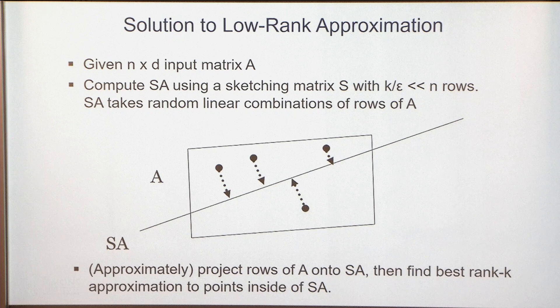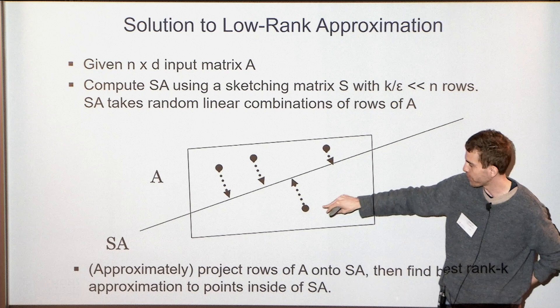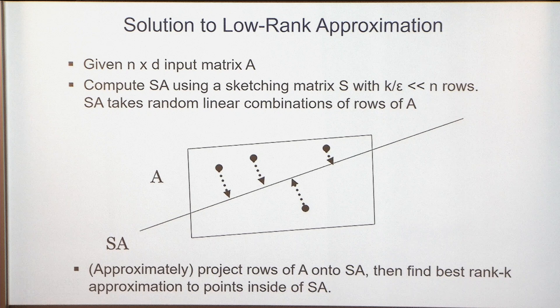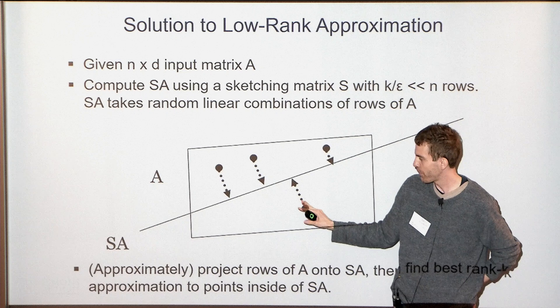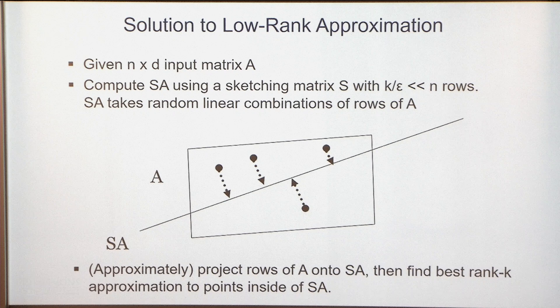One issue is that you can't afford in NNZ(A) time to project points exactly onto S·A. But projection is just least squares regression, and there are many randomized sketching algorithms for approximately doing projection. You move the points to an approximate closest point and the algorithm still works. This is the basic paradigm for applying sketching to low-rank approximation.